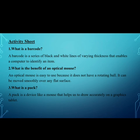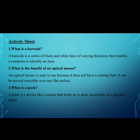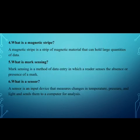Which is a laser mouse? Number three: what is a bug? A bug is a device like a mouse that helps us to draw accurately on a graphics tablet. Number four: what is a magnetic strip? A magnetic strip is a strip of magnetic material that can hold large quantities of data.